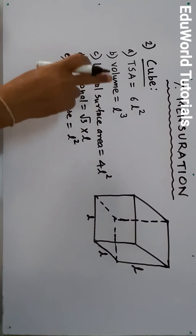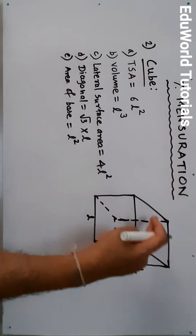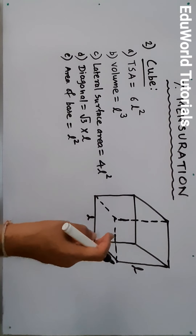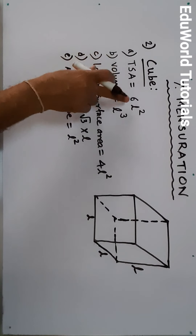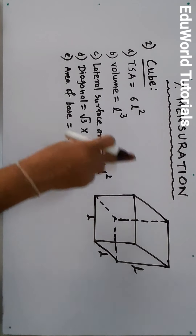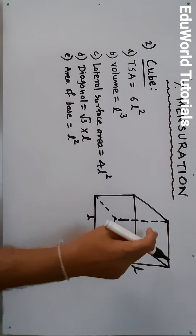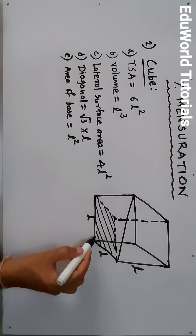For the cube, the formulas are similar to cuboid. TSA (total surface area) = 6L². It has six surfaces — top, bottom, and four vertical surfaces — each a square with area L². Volume of cube = L³, since length × breadth × height = L × L × L. Lateral surface area = 4L², considering only the four standing surfaces. Diagonal = √3 × L. Area of the base = L², since the base is a square.